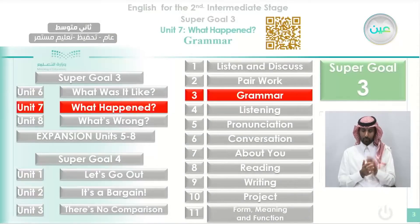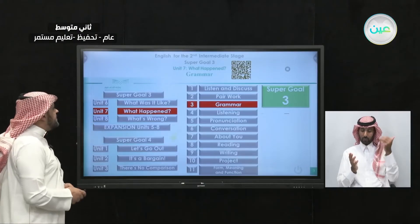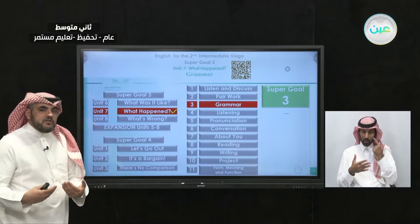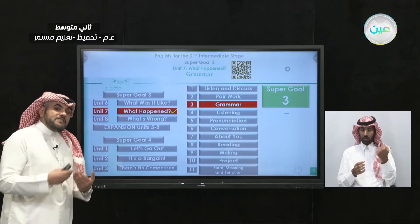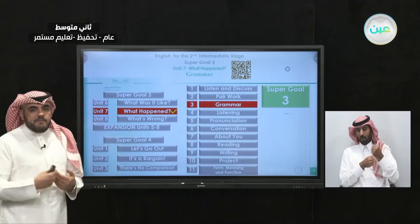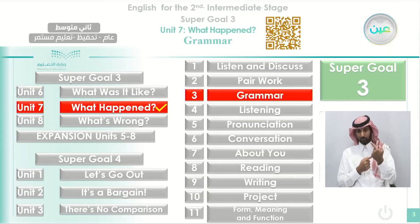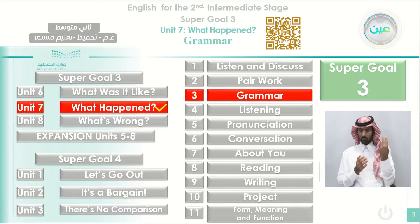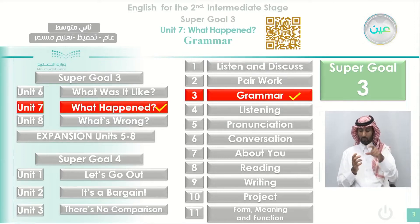Now we are at the second step in this unit — unit seven — which is under the title 'What Happened.' You know from the title that this unit concentrates on the past, the things that happened in the past. It also concentrates on the feelings that we are going to study today. We have studied them before. We are at step number two, which is grammar, section number three in your book.